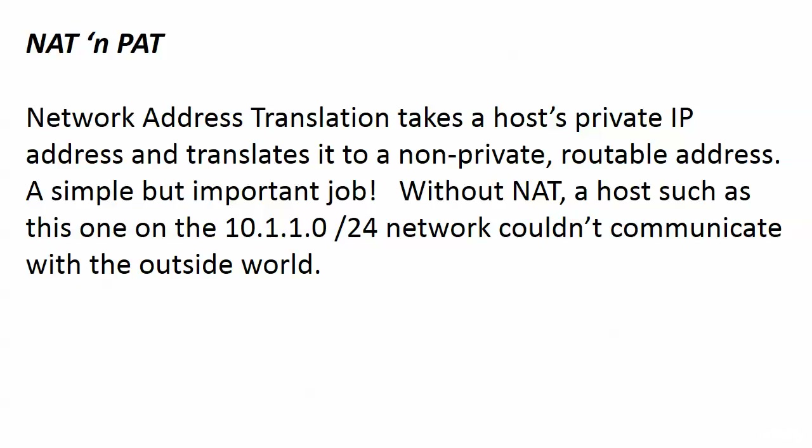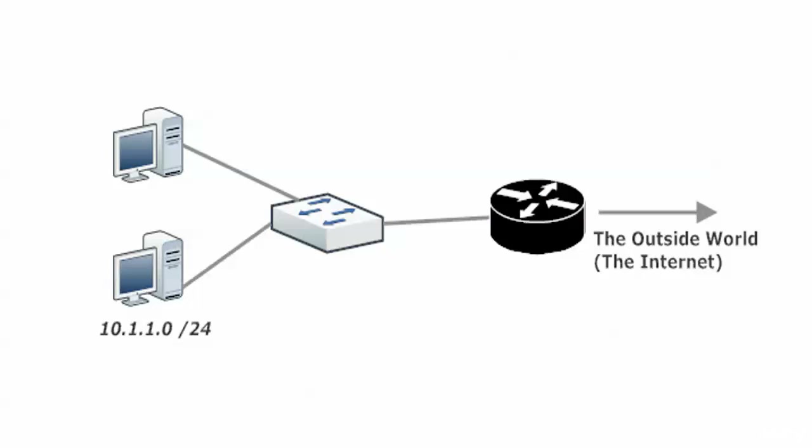What's going on with Network Address Translation? We're translating a network address, but what address exactly? We are taking a host's private IP address and translating it to a non-private routable address. Without that, hosts on say 10.1.1.0/24 couldn't communicate with anybody outside of their local network because those are considered private non-routable addresses. They have to be changed to something that can be routed across a WAN.